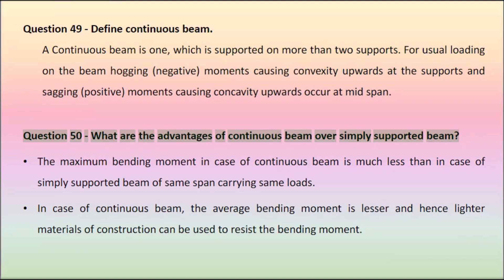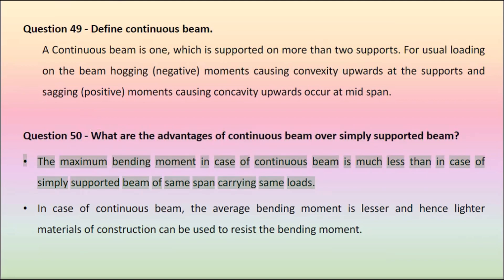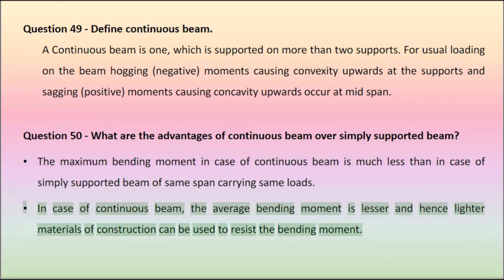Question 50: What are the advantages of continuous beam over simply supported beam? The maximum bending moment in case of a continuous beam is much less than in case of a simply supported beam of the same span carrying the same loads. In case of continuous beam, the average bending moment is lesser, and hence lighter materials of construction can be used to resist the bending moment. Thank you for watching.